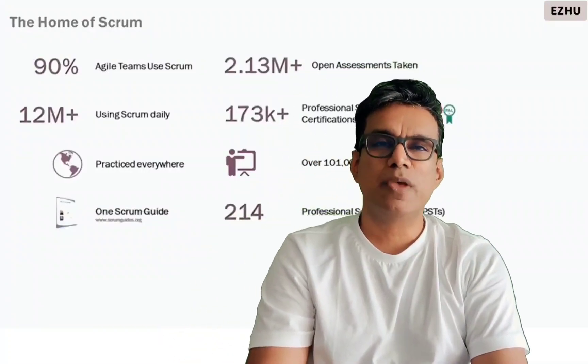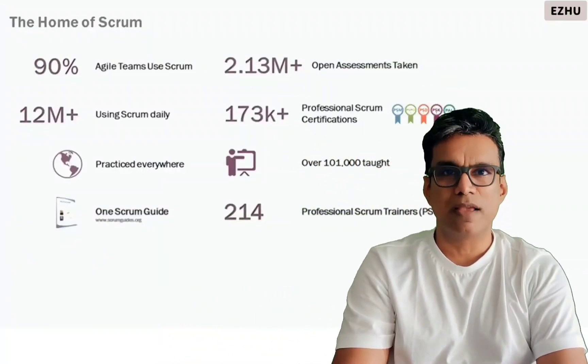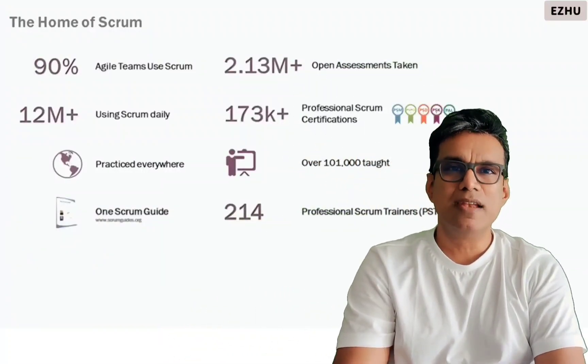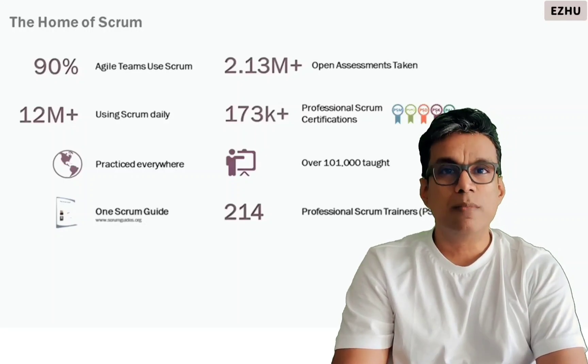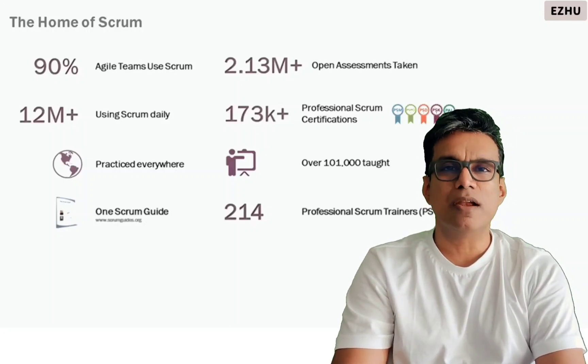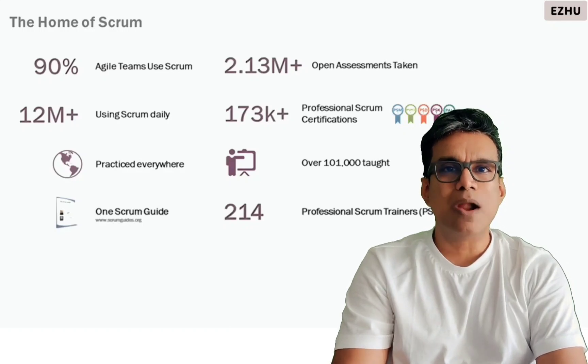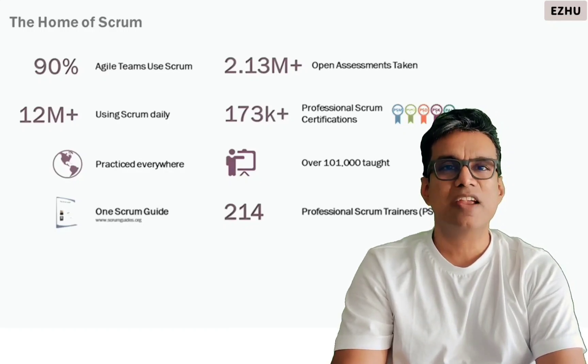Why Scrum? Scrum is a better way for building products. More than 90 percent of the agile teams use Scrum, and 12 million plus users use it on a daily basis. There is one single definition — one guide — for Scrum.